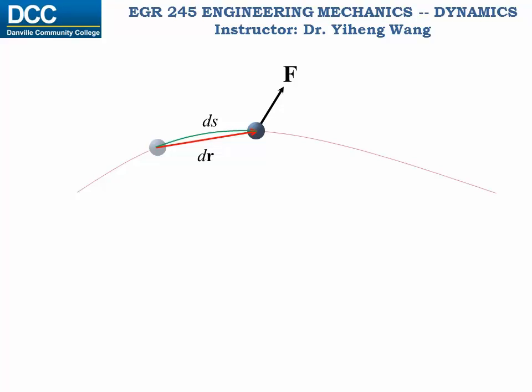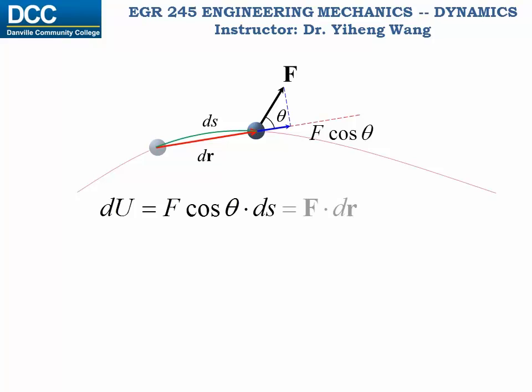During this short period of time, the work done by this force to this particle equals to its projection along the direction of dr, which is F times cosine theta multiplied by the length of the path ds. Notice that this agrees with the definition of the dot product of two vectors — in this case, the dot product of the force vector and position vector dr.